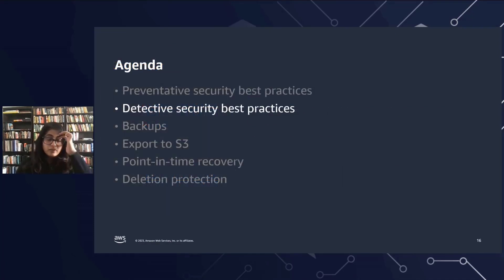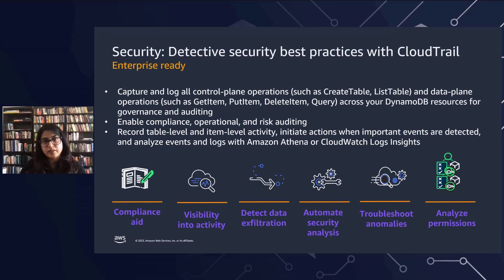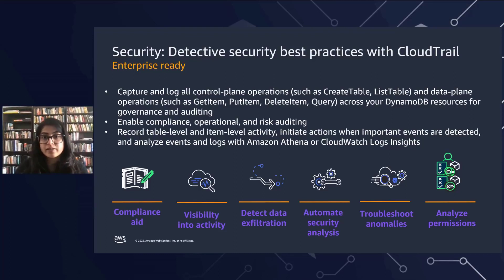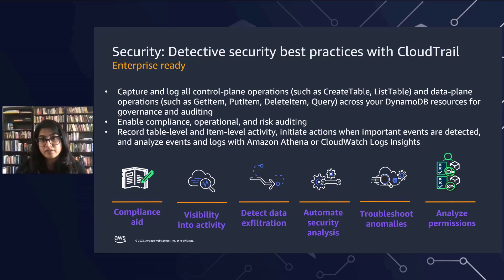Now let's go through some detective security best practices. These basically revolve around setting up CloudTrail and capturing all the logs of your control plane operations. You can use these for governance, compliance, operational auditing, and risk auditing of your entire AWS account. With CloudTrail, you can log and continuously monitor every single activity that happens across your AWS infrastructure, including DynamoDB. CloudTrail provides event history for all AWS account activity, including actions taken through the AWS console, SDK, command line interface, or through the APIs — and this is done at no charge.